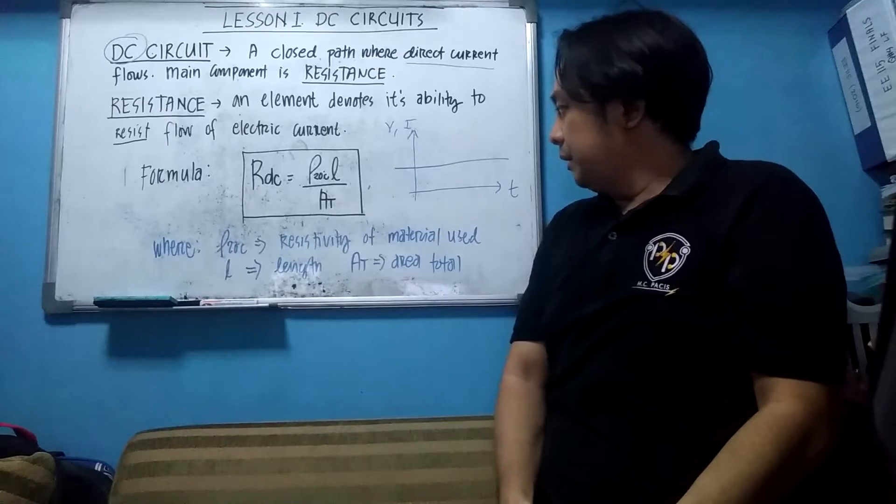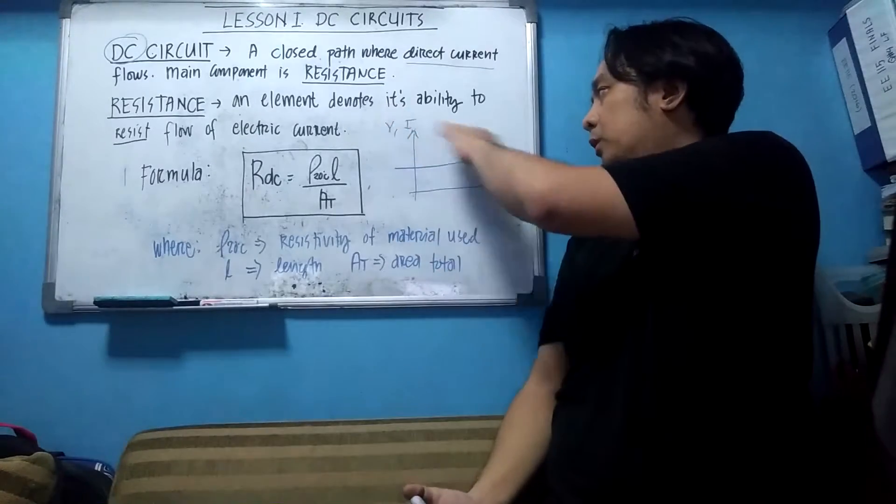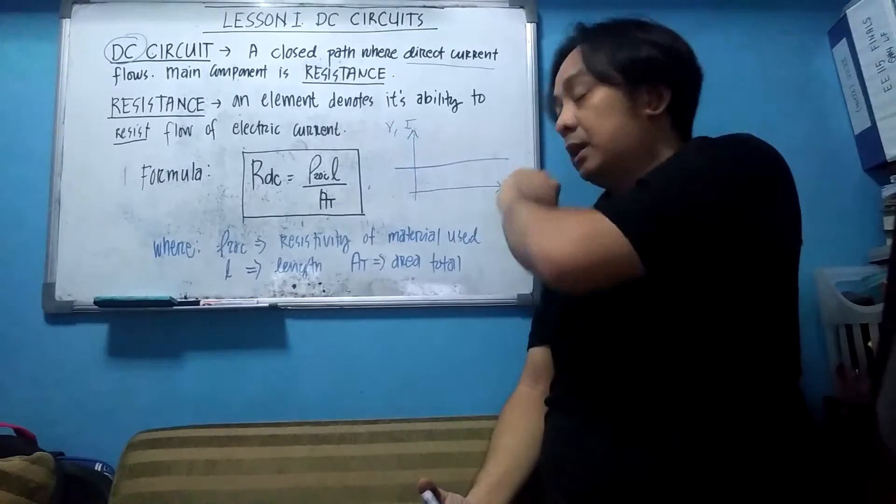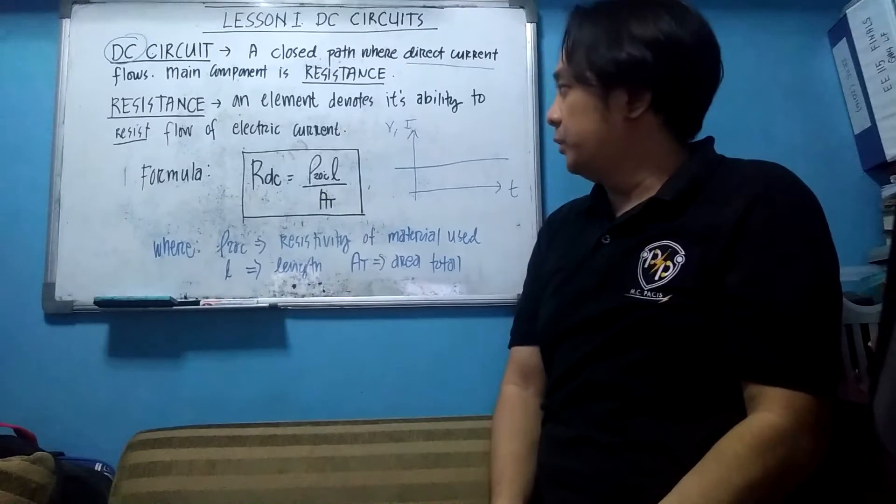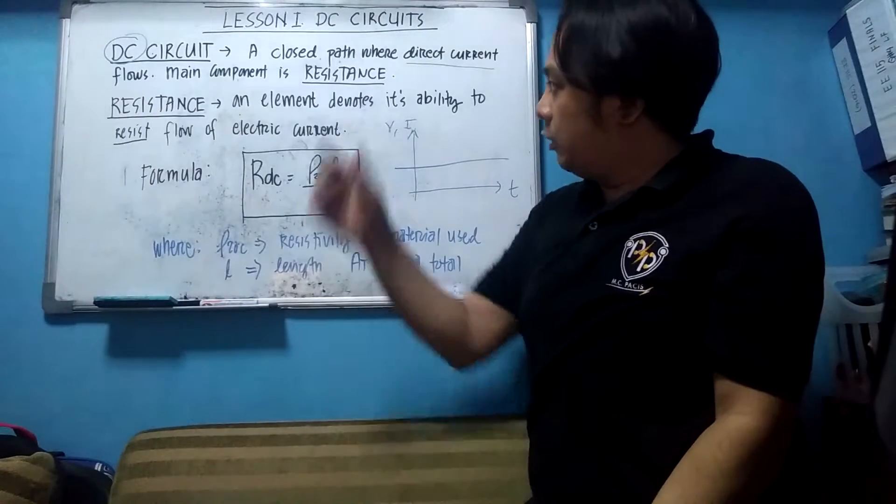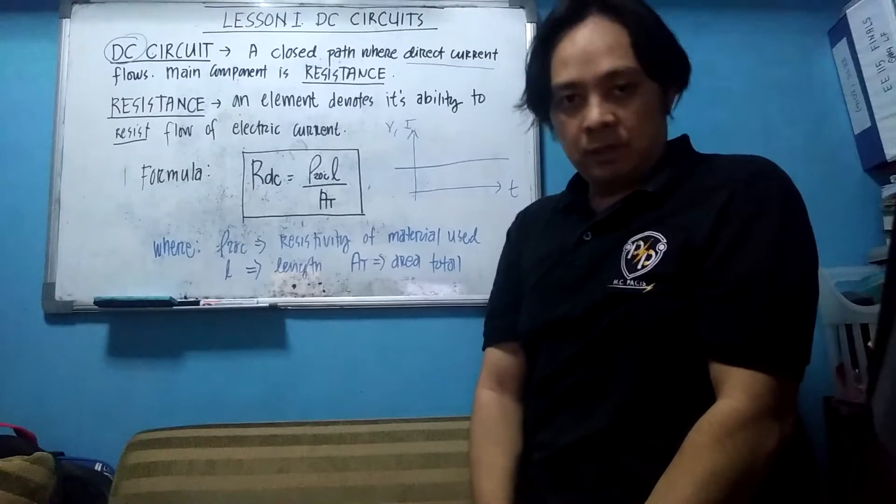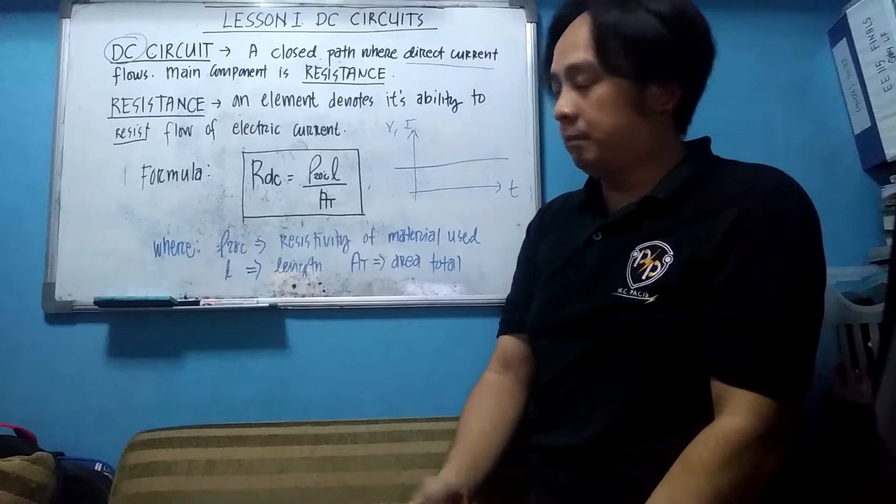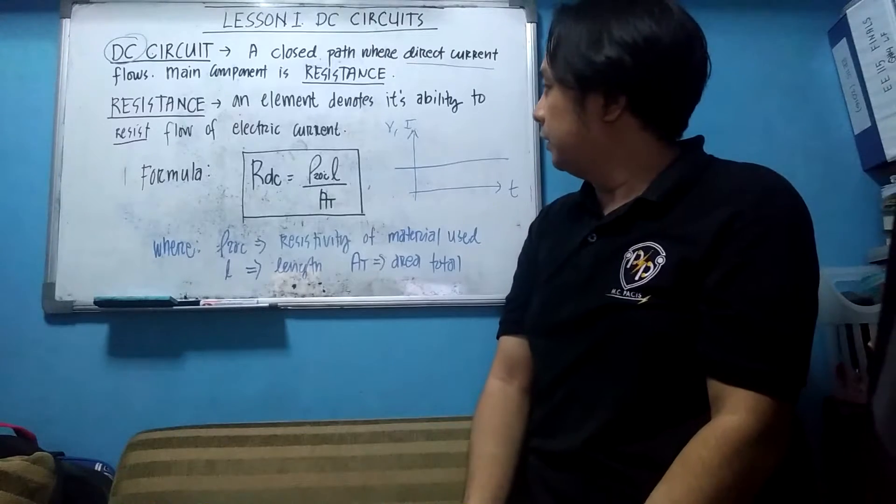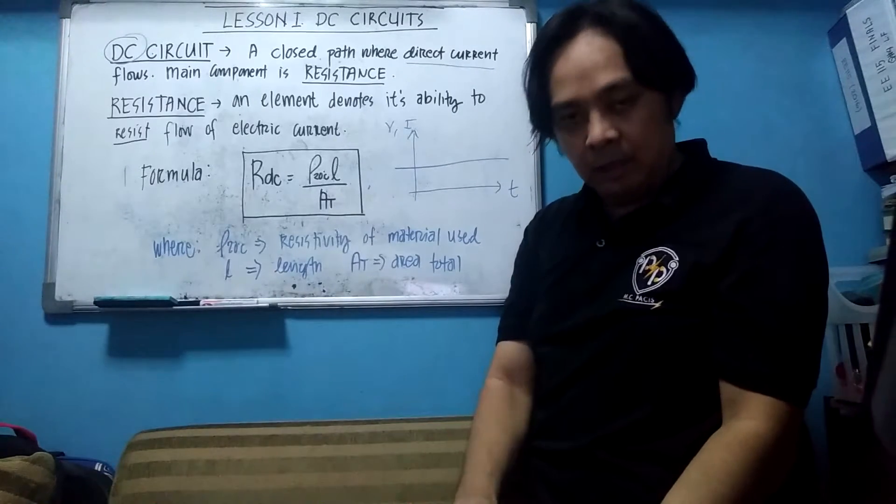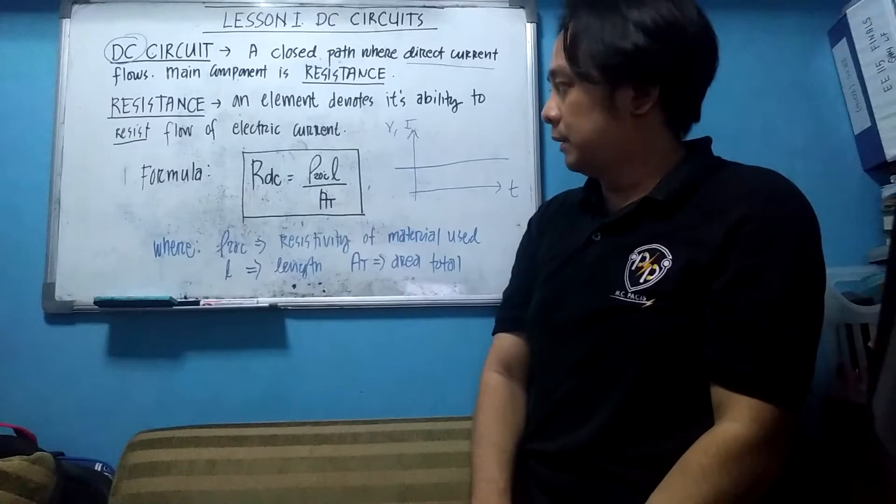It means voltage and current, the signal is straightforward. So the main component of this circuit is resistance. So what is resistance? Resistance is an element, an electrical element that denotes the ability to resist any flow of current or electric current.